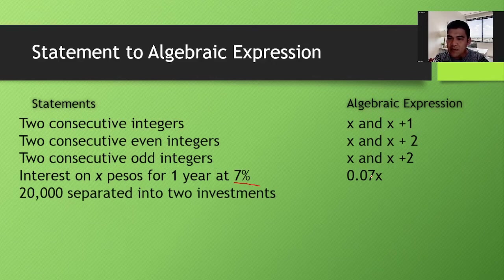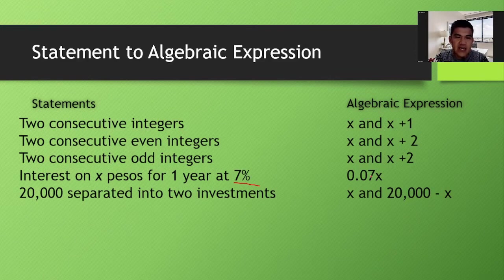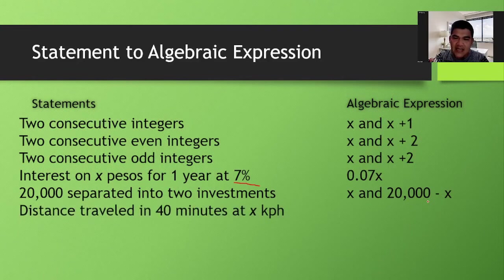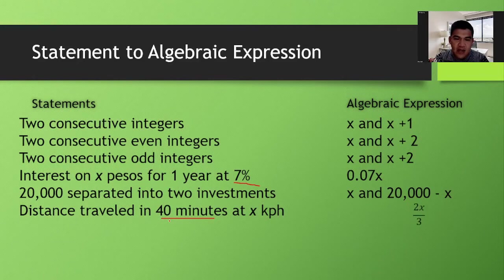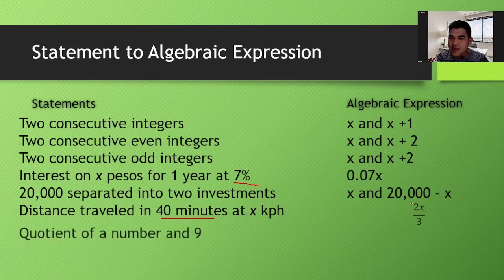'20,000 pesos separated into two investments' — the first investment is x, and you subtract that from 20,000, giving 20,000 minus x. 'Distance traveled in 40 minutes at x kilometers per hour' — distance equals rate times time, but since time is in minutes, you convert to hours: 40 divided by 60. Simplifying gives 2/3, so the distance is (2/3)x, or 2x over 3.